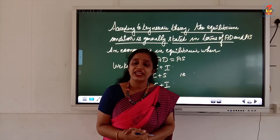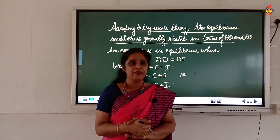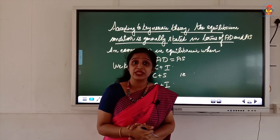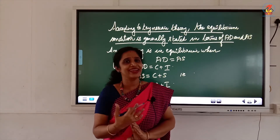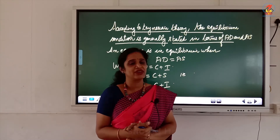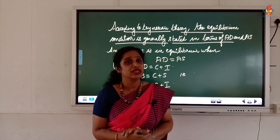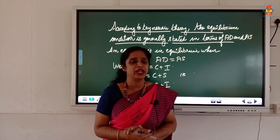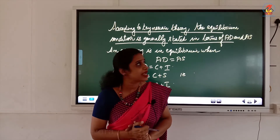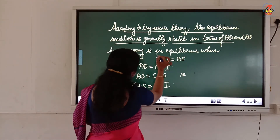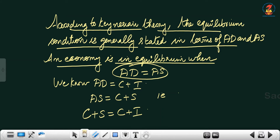In microeconomics, you have learned that equilibrium price is determined at a point where demand equals supply. We cannot directly relate that to macroeconomics, but the concept is similar. Likewise, Keynesian theory explains the equilibrium level of income based on the balance between aggregate demand and aggregate supply.